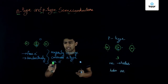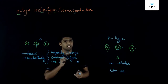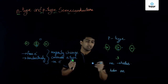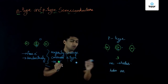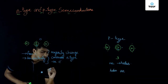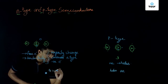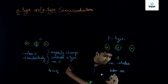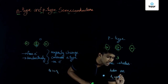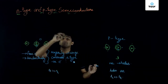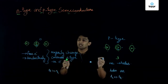For n-type semiconductors, the majority charge carriers are electrons. For p-type semiconductors, the majority charge carriers are holes. In other words, in n-type the number of electrons is greater than the number of holes, and in p-type the number of holes is greater than the number of electrons. This is all about n-type and p-type semiconductors.